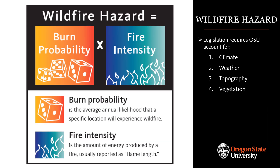Wildfire hazard represents the potential for wildfire to damage a structure as a result of the structure's environmental setting. Senate Bill 762 was explicit with respect to what environmental criteria can be considered when calculating hazard. The four criteria include climate, weather, topography, and vegetation. Wildfire hazard is comprised of two elements: burn probability and fire intensity. Collectively, these two elements represent the ways in which climate, weather, topography, and vegetation interact to cause wildfire hazard.